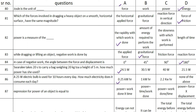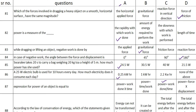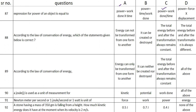The expression for power of an object is equal to — and the answer is option C — power equals work done divided by time. The next one: according to the law of conservation of energy, which of the statements given below is correct? The answer is option C — the total energy before and after the transformation always remains constant.